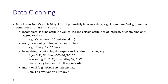Incomplete data means that an attribute value is missing, the data lacks a certain attribute of interest, or it contains only an aggregate value. For example, instead of marks for each subject, only the overall total is recorded — that is an aggregate value. Consider an example where the occupation field has no value assigned — that is a missing attribute, which is an error in the data.